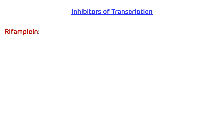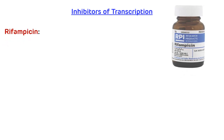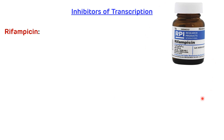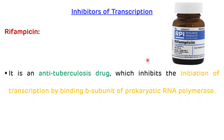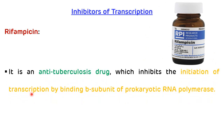First, an important example of an inhibitor of transcription is rifampicin. Rifampicin is used as an anti-tubercular drug and it inhibits initiation of transcription by binding the beta-subunit of prokaryotic RNA polymerase enzyme.